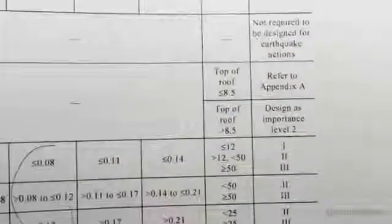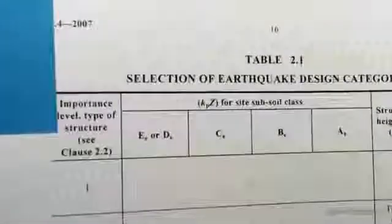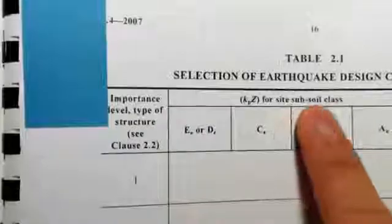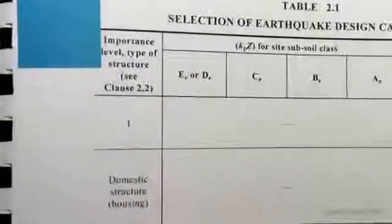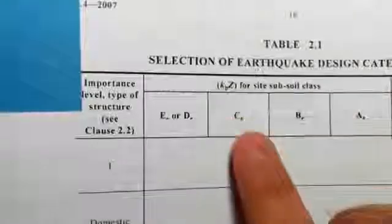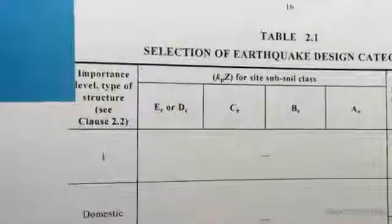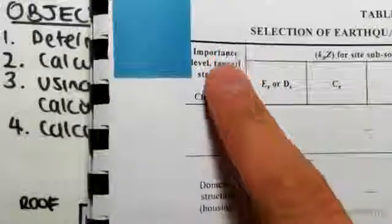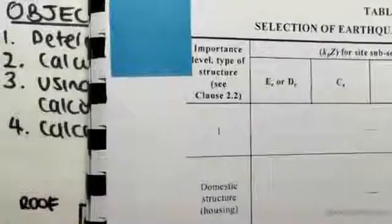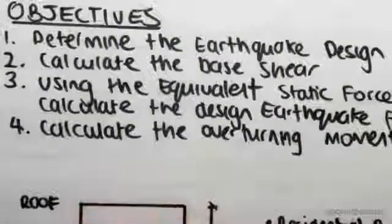We're going to zoom in there. We need to know in this column we need to know the subsoil class. We're going to be finding that. We also need to know this kp z value which we're also going to be finding. And we also need to know the importance level. So there's a couple things we need to work out before we actually get to find the EDC.